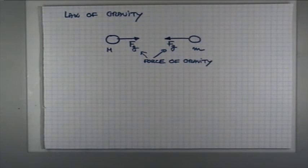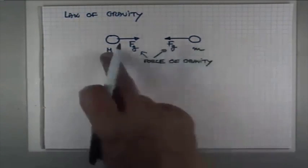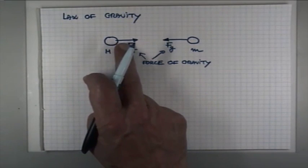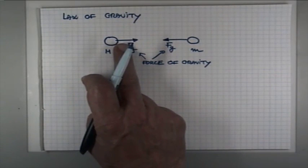So when the Earth is pulling on the Moon with the force of gravity, the Moon is pulling on the Earth by the force of equal magnitude, but the opposite direction.